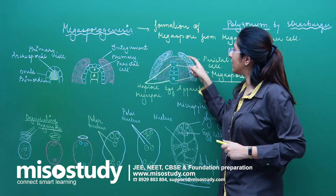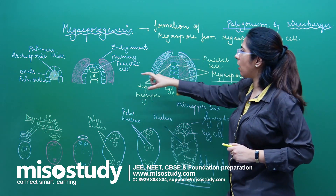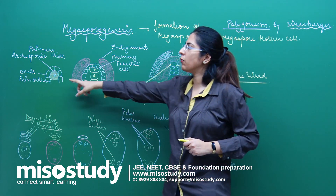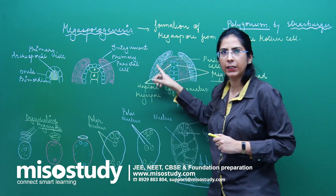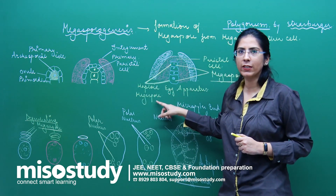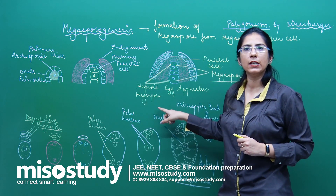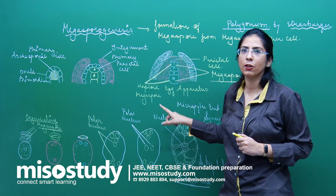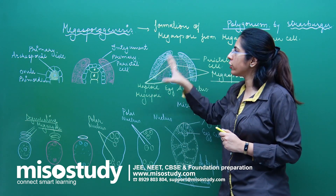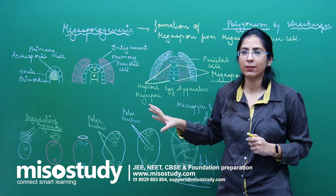Listen very carefully: this is the Micropylar end. The mother cell has now divided and formed 4 cells, which are termed the 4 haploid Megaspores. This is the whole process of Megasporogenesis.